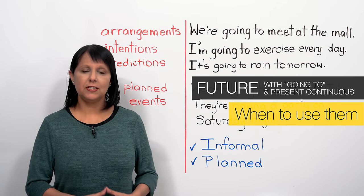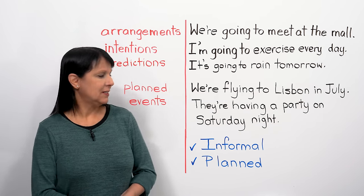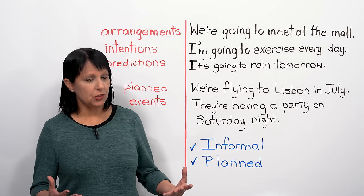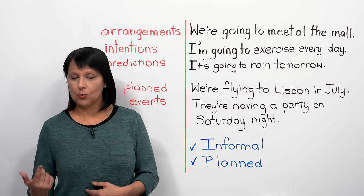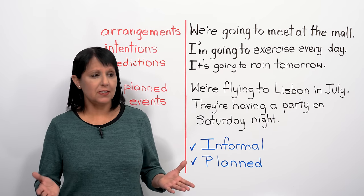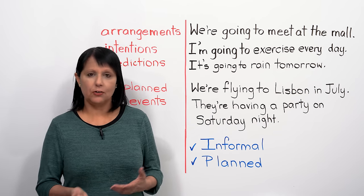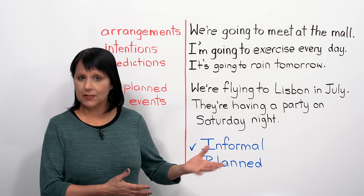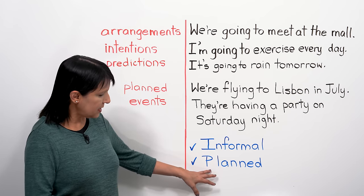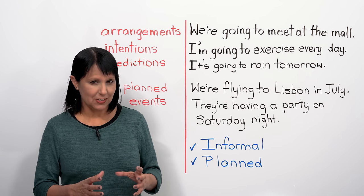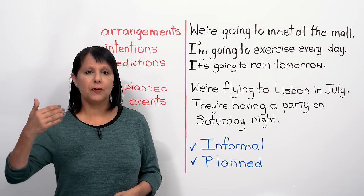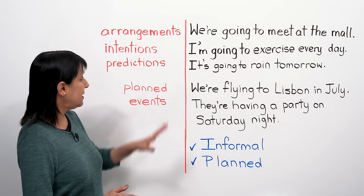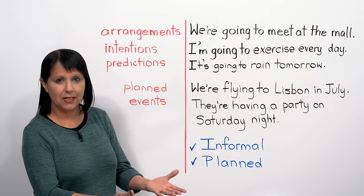Now let's look at when to use these two ways to talk about the future. The most important thing to remember is that we use them in informal situations — informal communication, spoken or written. Informal doesn't have to mean only social situations; it can also be at work with your colleagues. The other key point is that they should be planned situations — not something you just decide, but something where you've made a plan in advance.